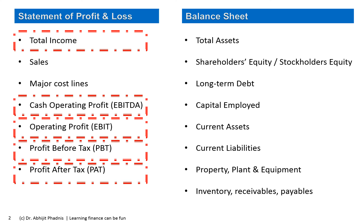I have already created a separate video on why profit is defined at so many different levels — those interested can see that video. For now I want to focus on one important issue: whether the denominator should be total income, which includes both core and non-core income. Core income is the sale of goods and services, while non-core income is incidental income such as sale of scrap, sale of waste material, and income from investments.